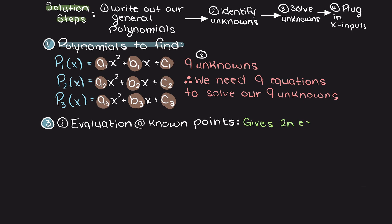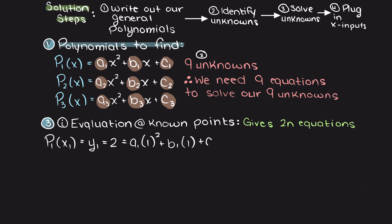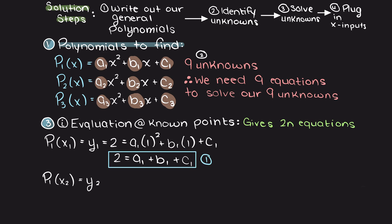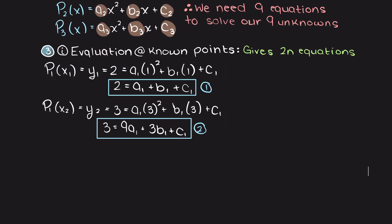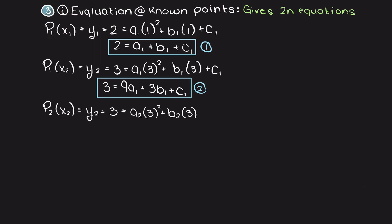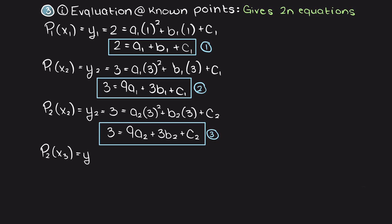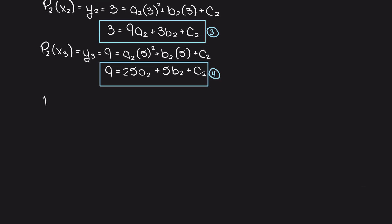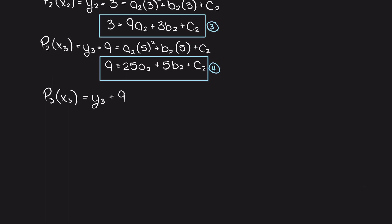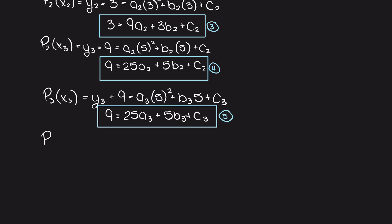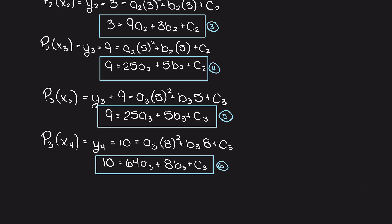As we learned in the last video, we can get 2n equations through evaluating each of our 3 polynomials at our known data points. We are going to evaluate our first polynomial at its 2 data points, x1 and x2. P2 will be evaluated at x2 and x3, and lastly p3 will be evaluated at x3 and x4. This results in our 6 equations, which I will highlight here.